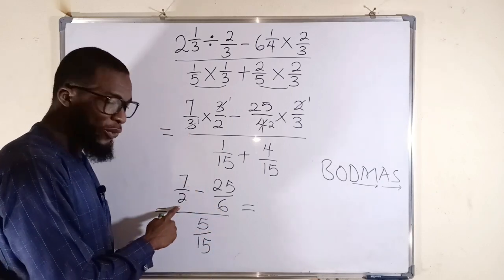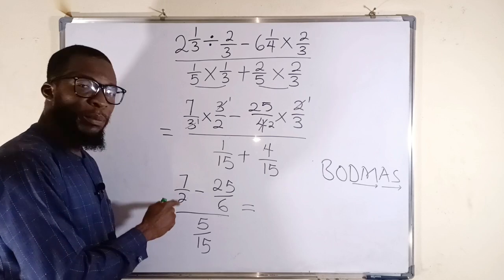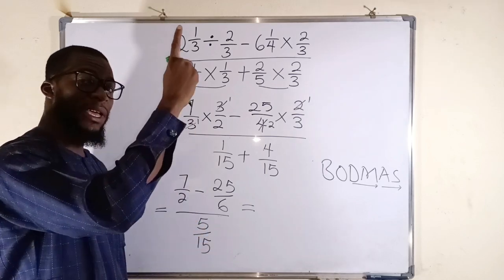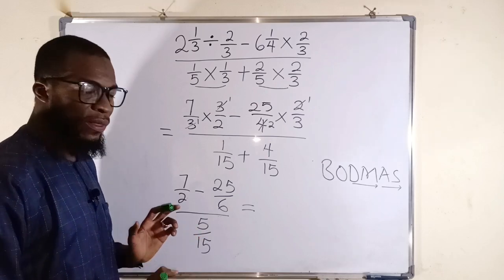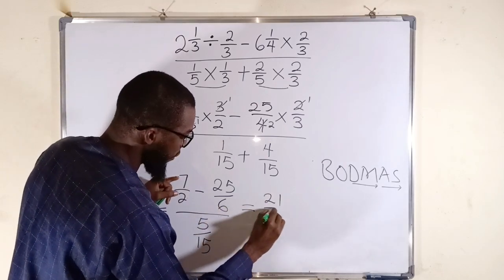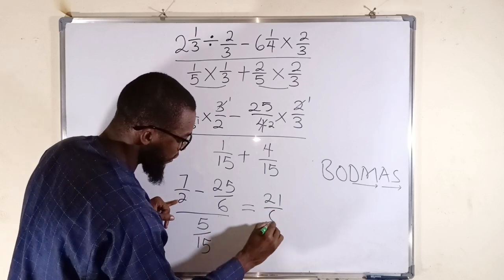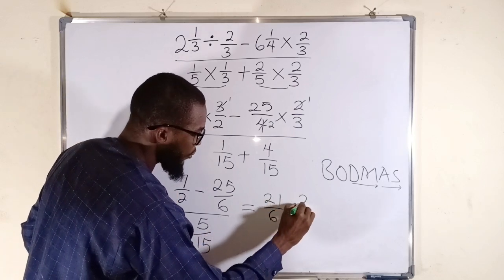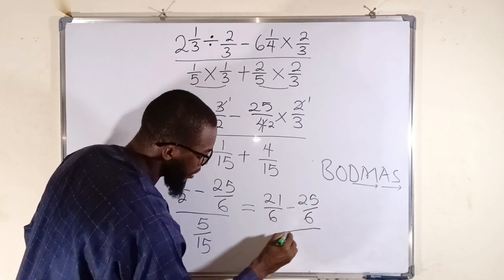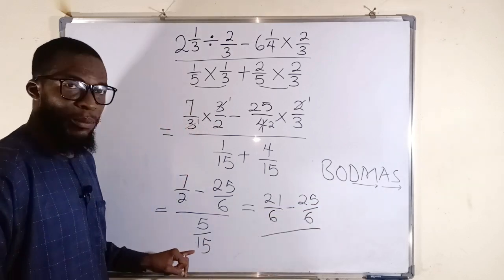Already, this is 6. So we are going to transform 2 into 6 by multiplying 2 by 3. But for equivalency, we have to multiply the top number by the same value, 3. So 3 times 7 is 21. Divide by 3 times 2 is 6. Then we minus 25 divided by 6. Remember, we have 5 divided by 15.